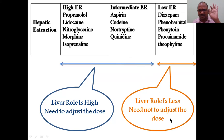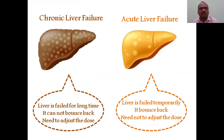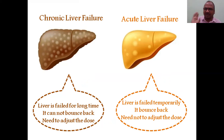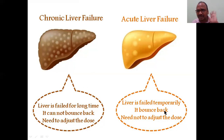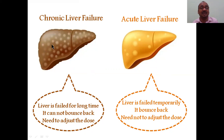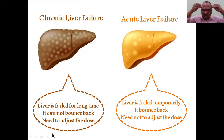Next point: chronic failure versus acute failure. Acute means a very short time — either a week, one month, maximum three months. Acute liver failure is reversible; the liver fails temporarily and bounces back to normal, so dose adjustment is not needed. Chronic liver failure means the liver has failed for a longer time — it is irreversible, it cannot bounce back to normal, and hence you must adjust the dose.